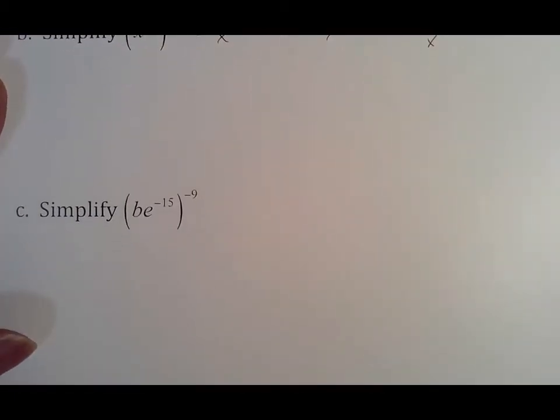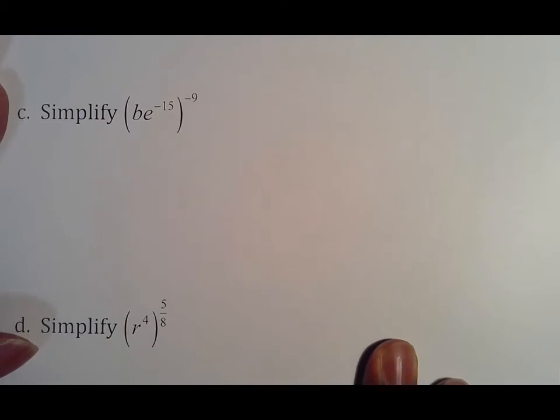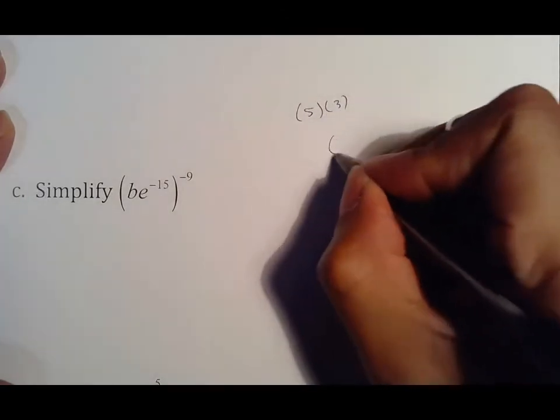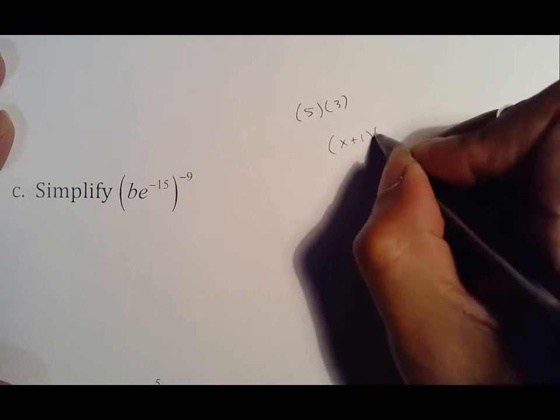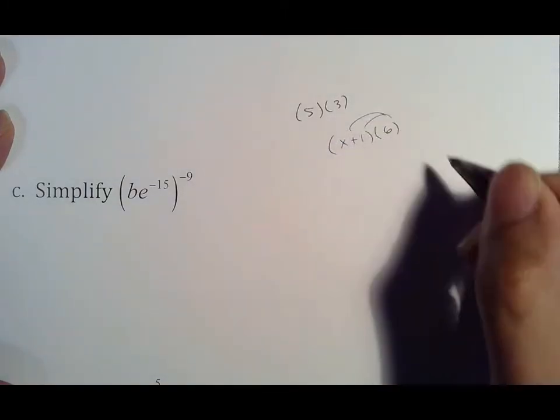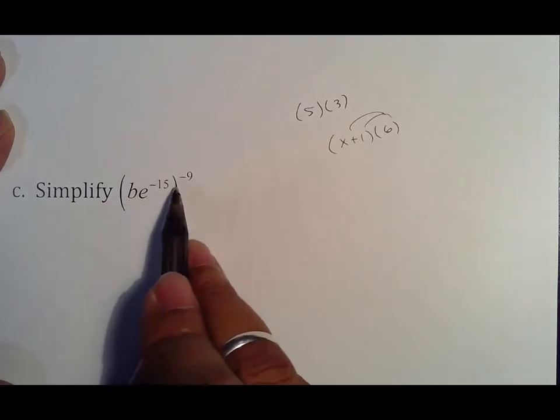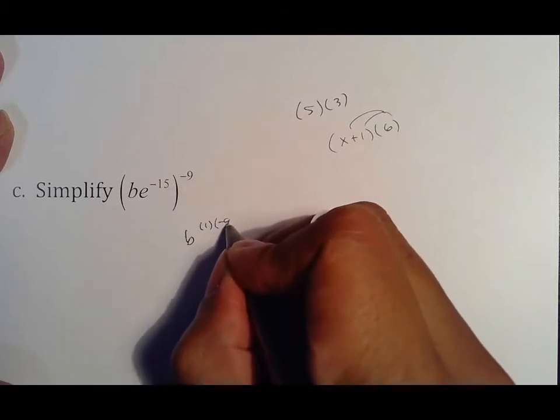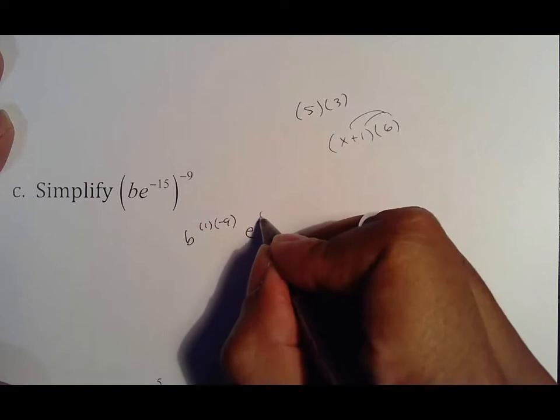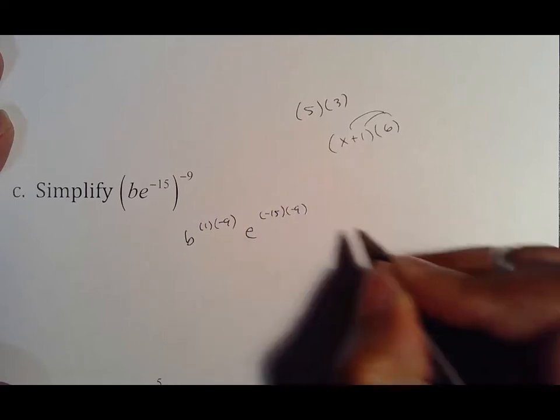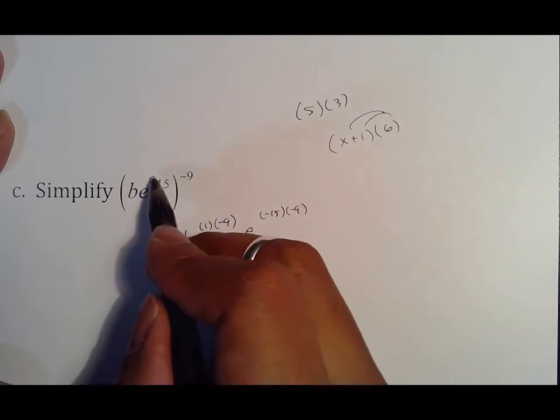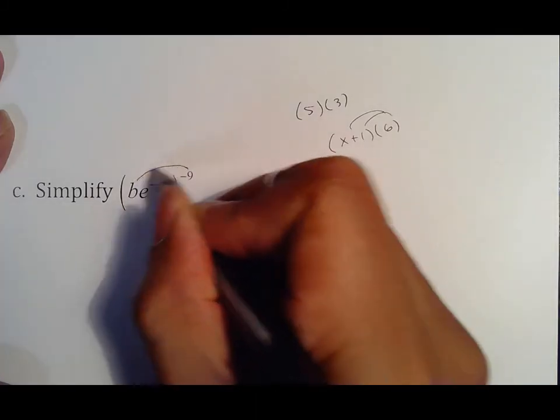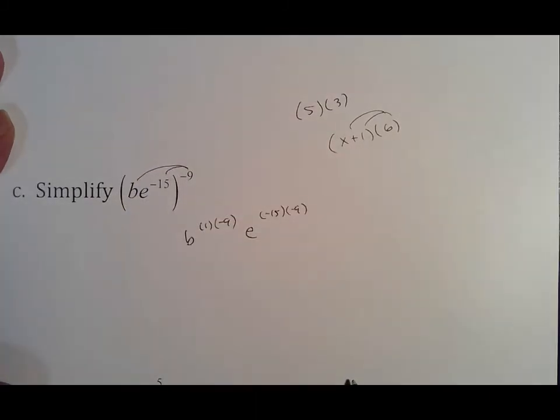Now what happens if there's more than one base? You simply distribute that base. So that would be b to the one, because remember that's one, times negative nine, e to the negative 15 times negative nine. That one is there because there is one b in that parentheses being multiplied by negative nine. I am distributing this to both exponents.